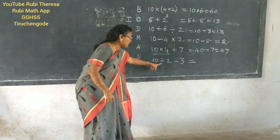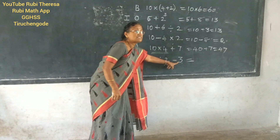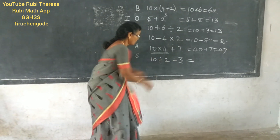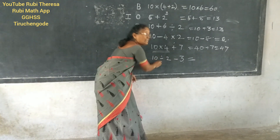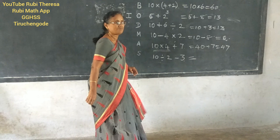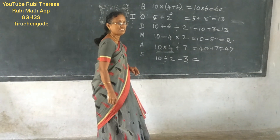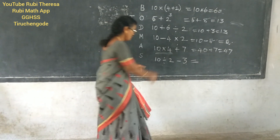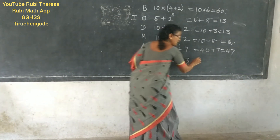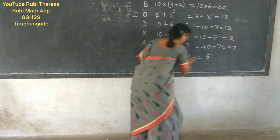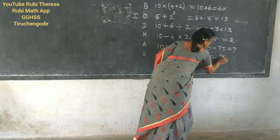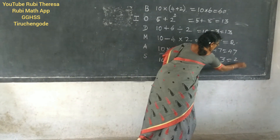Next one — division and subtraction. Which one do you have to do first? Divide. Do you follow? Yes. So what is it? 10 divided by 2 is 5. 5 minus 3 is 2.